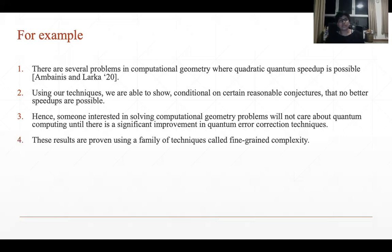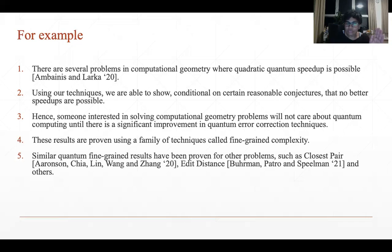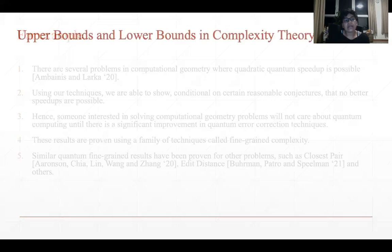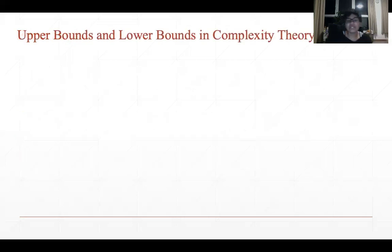The results we prove here use a family of techniques called fine-grained complexity. Fine-grained results in the quantum setting have also been given for other problems such as the closest pair problem and edit distance problem, but all these results are fairly new, dating about one and a half years ago. Let me briefly explain what upper bounds and lower bounds mean in complexity theory.